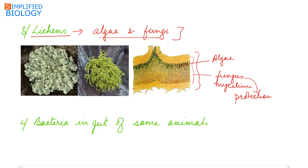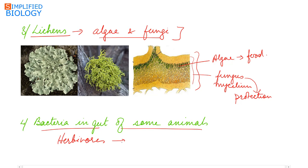The fungus provides protection to the algae, which in turn synthesizes food by the process of photosynthesis, providing it to the fungal component. Another example is bacteria in the gut of some animals, such as herbivores, where the bacteria help in digestion of cellulose.